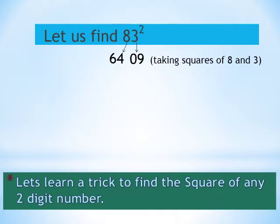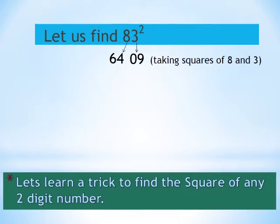Now we got the number 6409. Now let us multiply the digits, that is 8 into 3 equals 24, and then we will multiply the product with 2.